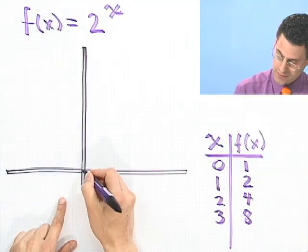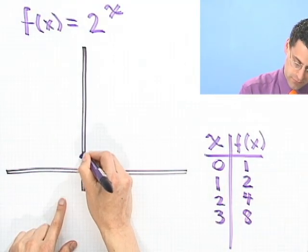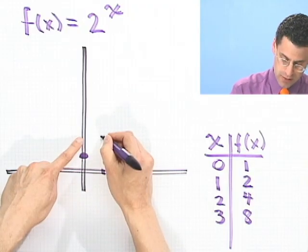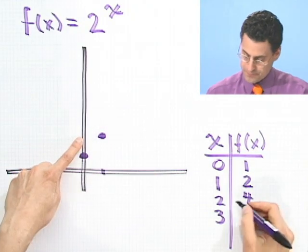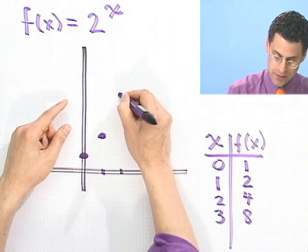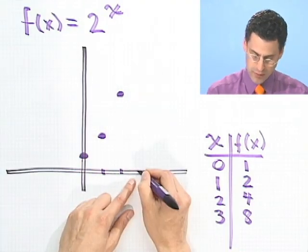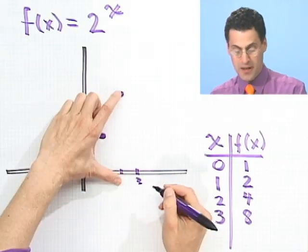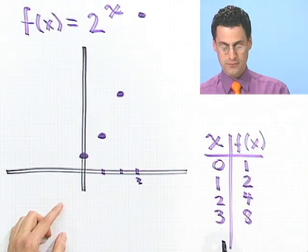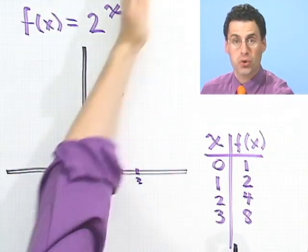So let's graph this. At 0, we have 1. At 1, I have 2, so I go up to 2. At 2, I'm at 4, so I double. At 3, I even double this, so I'm almost off the page. Dramatic growth. This goes right up there.